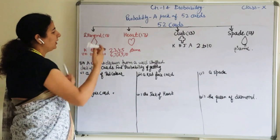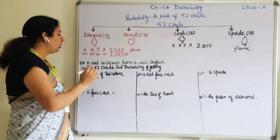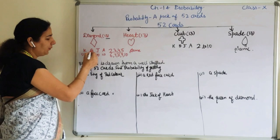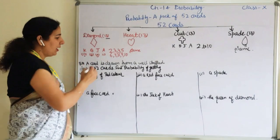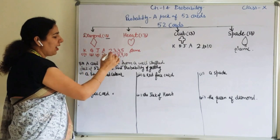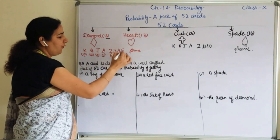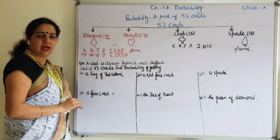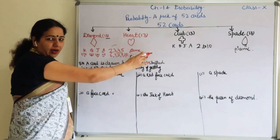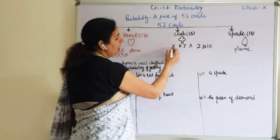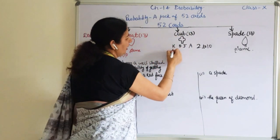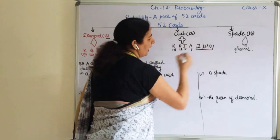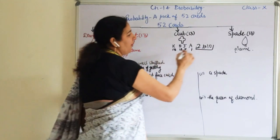Each suit has 13 cards. K is the 13th card, Q is the 12th, and J is the 11th. Card number one is known as Ace, and after that two through ten are the number cards — that is nine number cards. Exactly the same for the heart card also. For club, same 13: king, queen, jack, ace, and number cards two through ten.